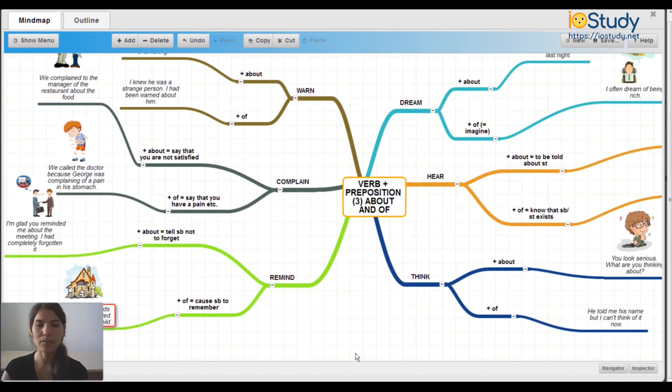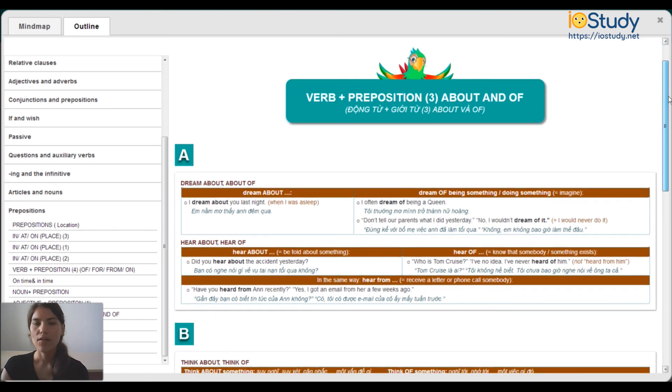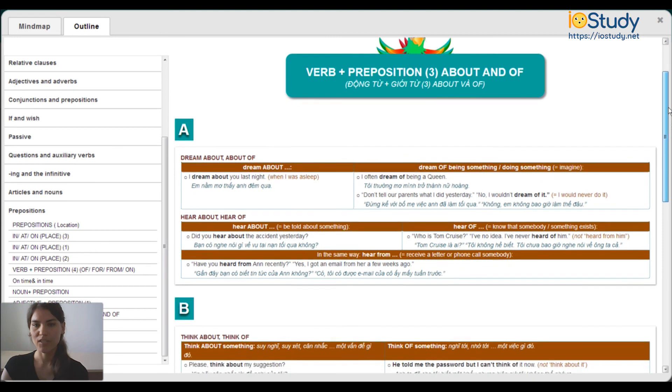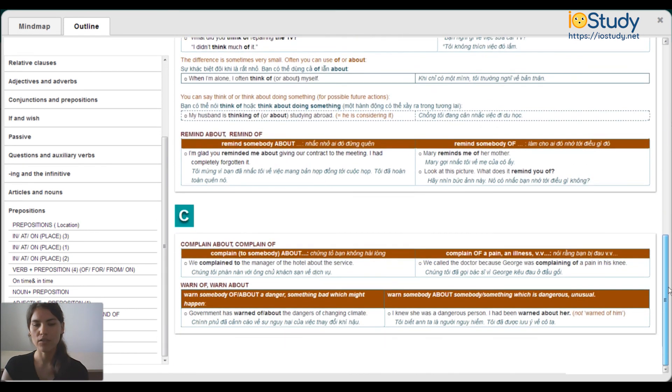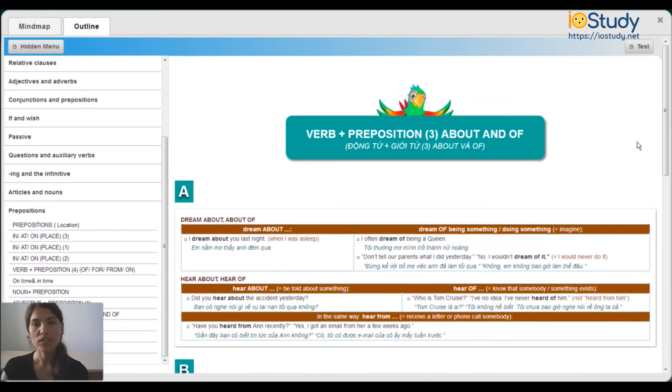Now we have the mind map completed for verb plus preposition about and of. You can click here to find the outline. For more information, you can read through this to find more about verb plus preposition about and of. You can find examples and further situations here. Once you're finished and you want to move on, you can click here to take the test. In the next video, I will take the test with you. Thanks for joining me in this video where we learned about the grammar rules for verbs plus prepositions about and of. See you again next time. Goodbye.